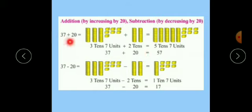See the first example: 37 plus 20. Now 3 tens 7 units plus 2 tens. So 3 tens 7 units equals 37 plus 2 tens. First we can directly add tens: 1, 2, 3, 4, 5, so it is 5 tens and 7 units. So 5 tens 7 units means 57. Or in 37, 37 plus 10 is 47, 47 plus 10 is 57. So 37 plus 20 is 57.